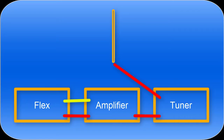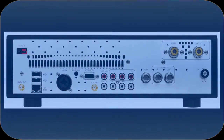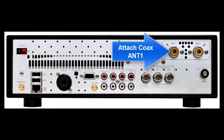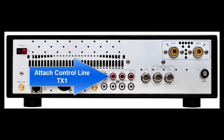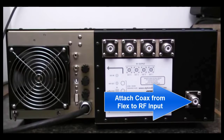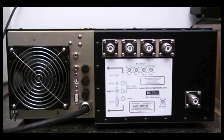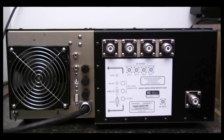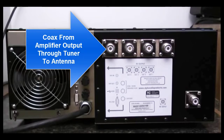These are the only connections you'll need for basic operation. Now let's take a look at the rear panel of the Flex 6500. We'll connect our coax to the antenna 1 connector, and we'll connect our control line to TX1. Now let's move to the back panel of the Alpha amplifier. Here we'll connect the other end of the coax cable to the RF input, and we'll connect the other end of the TX control line to the terminal labeled key in.